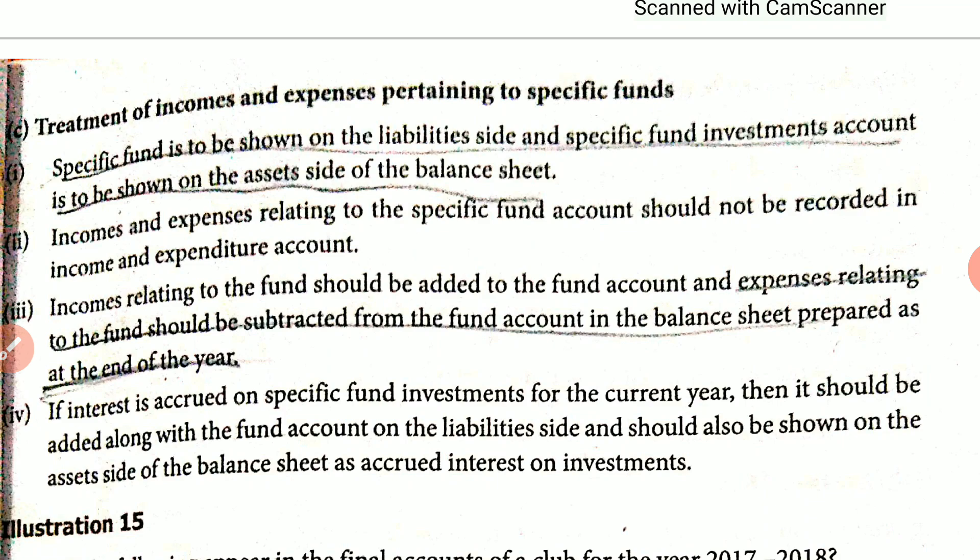The next sum is a model problem. The specified fund is to be shown on the liability side, and the specified fund investment account is to be shown on the asset side of the balance sheet.